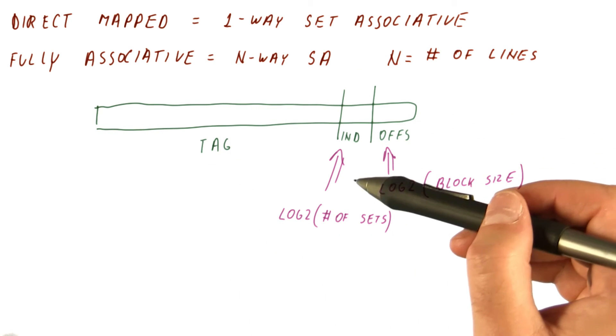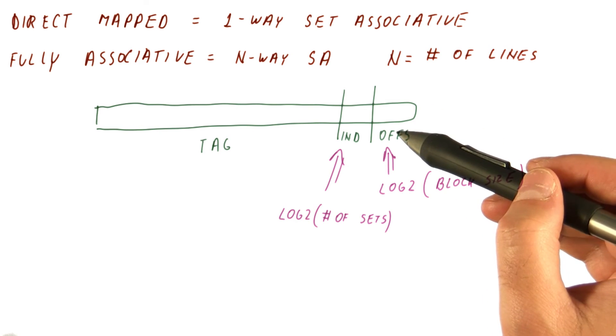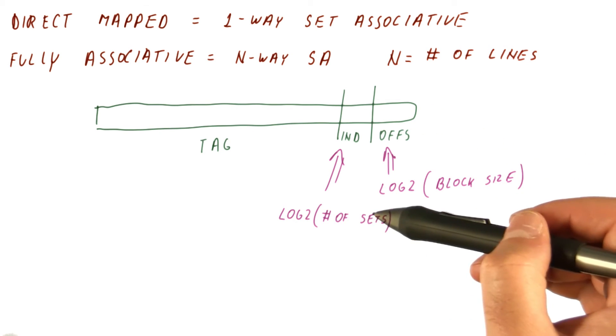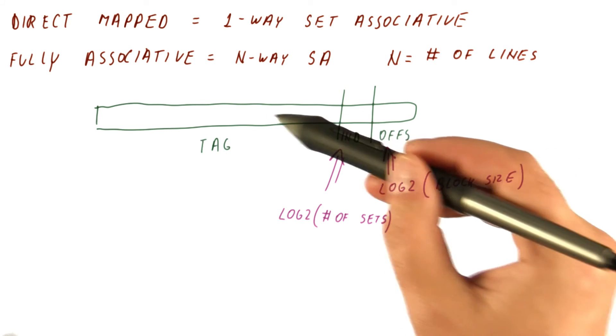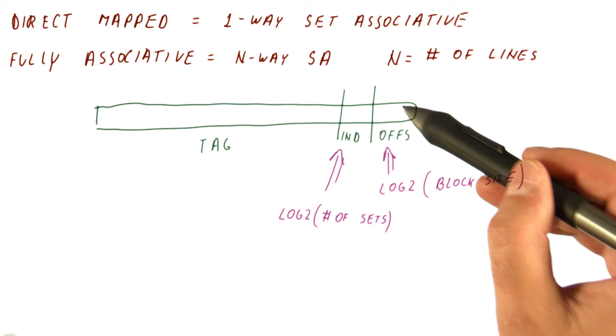When you're trying to figure out which bits are the index bits, we actually need to know which bits are the offset bits too. Because knowing that we have, for example, three index bits, doesn't really tell us whether they're here, or here, or here. That depends on the offset bits.